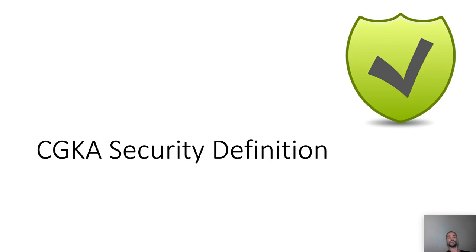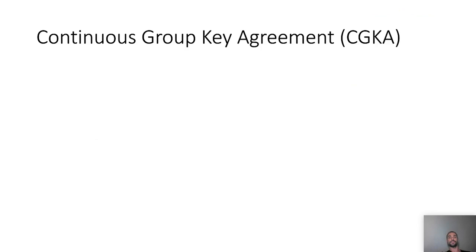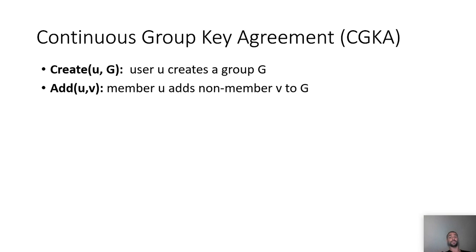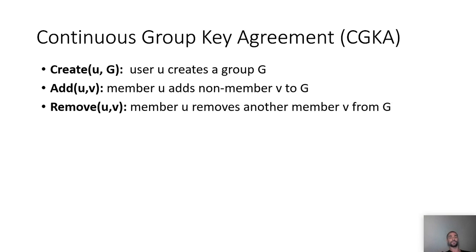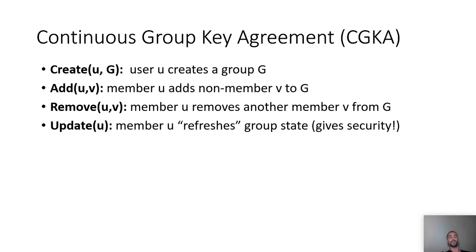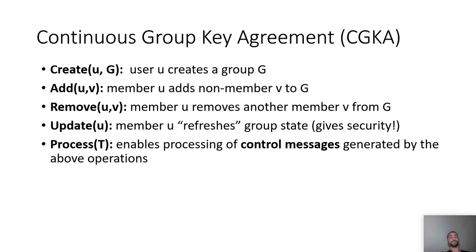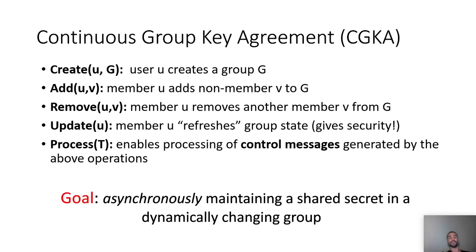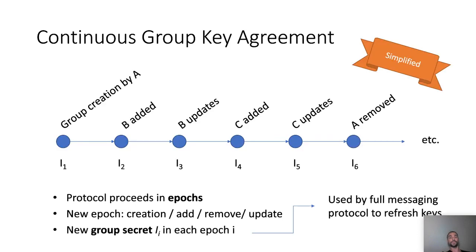Now I will present the simplified version of our CGKA security definition. Our primitive supports the following functionalities: group creation, where a user U can create a group G; add, where a member U can add a non-member V to the group; and similarly remove. We also have the update operation, which refreshes the group state and is important for security. And the process operation, which enables processing of control messages generated by the above operations. The goal is to synchronously maintain a shared secret in a dynamically changing group. Protocol execution proceeds in epochs, and with each operation we have a new epoch and a new group secret.